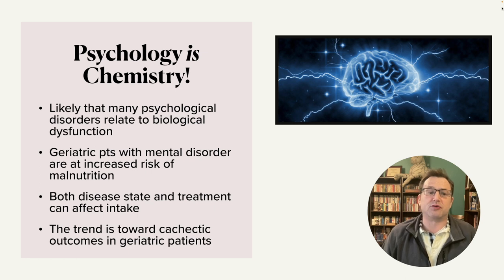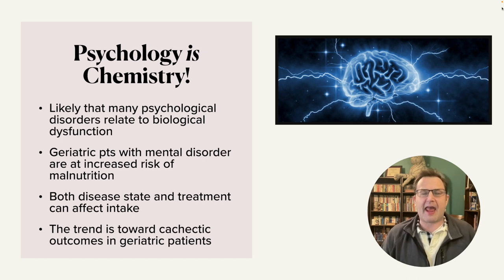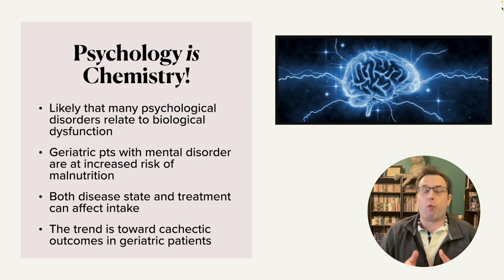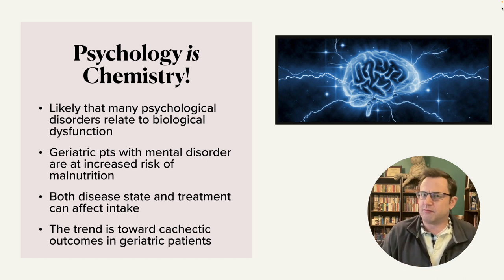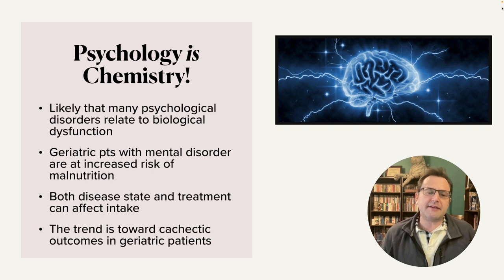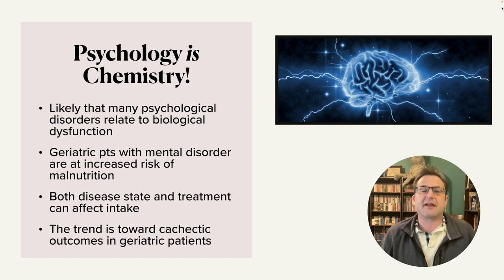Geriatric patients with mental disorders are at an increased risk of malnutrition. The real reason for this is that both the disease state and the treatment can affect intake. Being depressed can affect someone's intake — whether they have an appetite or not, what they choose to eat, if they have the energy to make food. Also, the treatment can affect intake. A lot of medications for psychological disorders impact appetite. The trend is toward cachectic outcomes in geriatric patients, which is really unfortunate. That's what you really want to avoid in geriatric patients because they're so prone to this already.